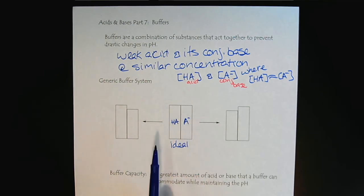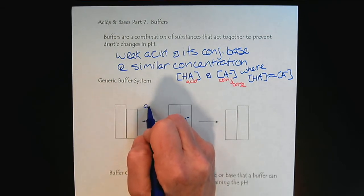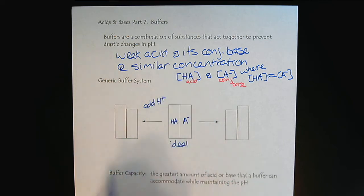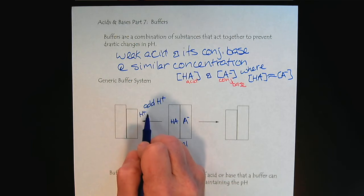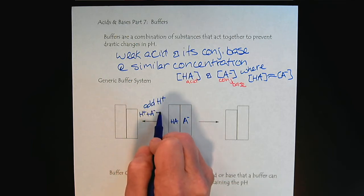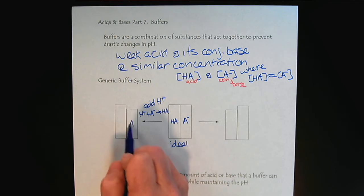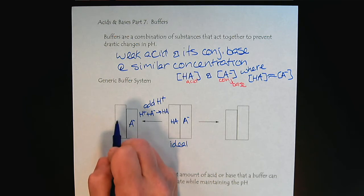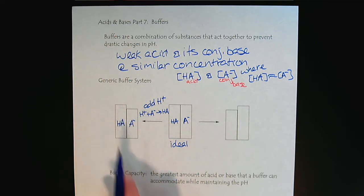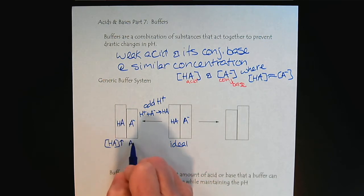Now, if our system has an introduction of H+, what's the H-plus going to do? The H-plus reacts with the A-minus and it produces HA. So we can see here that we lose some of our A-minus because it reacts with H+, and we produce more HA. The concentration of HA increases and A-minus decreases.